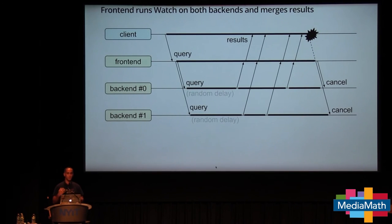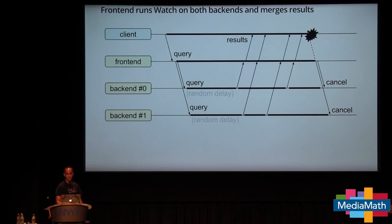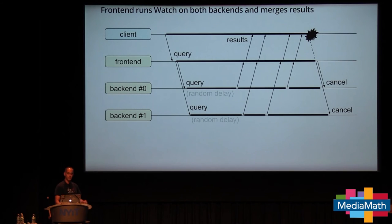With Watch, where Search returns the first result and abandons the rest, we're going to merge results from the two backends as we go. Each backend will sleep for a random delay, send a result, sleep again, send another result, and so on. The frontend merges that stream of results. When we kill the client with Ctrl-C, that tears down the transport and automatically tears everything else down.